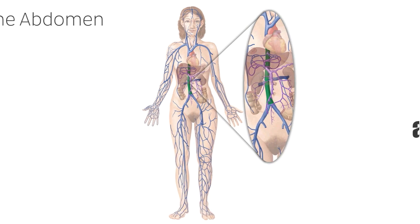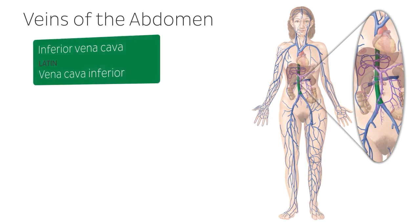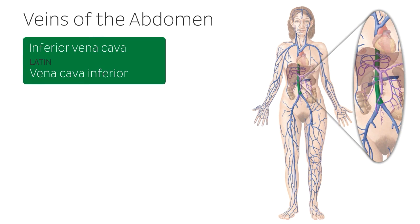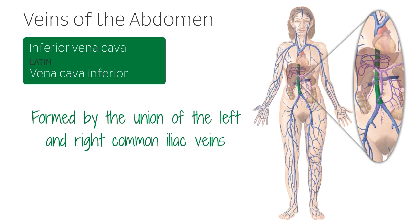The first vein we're going to look at today is the inferior vena cava, which we can see here highlighted in green. It is the largest vein in the human body and it transports venous blood from the lower limbs, the back, the abdominal walls, the pelvic viscera and the abdominal viscera to the right atrium of the heart. The inferior vena cava is formed by the union of the left and right common iliac veins, as we can see very clearly here in this image. This union occurs approximately at the level of the fifth lumbar vertebra.